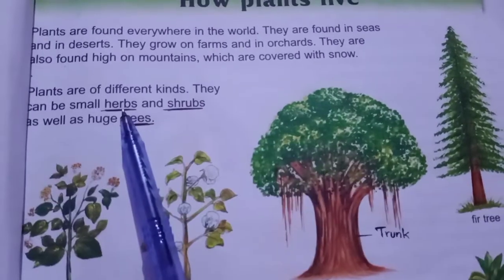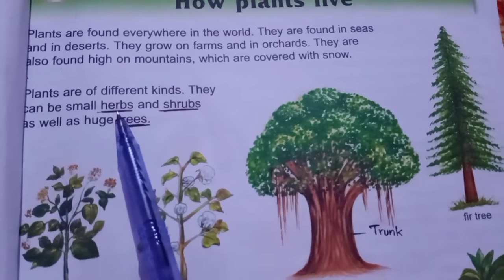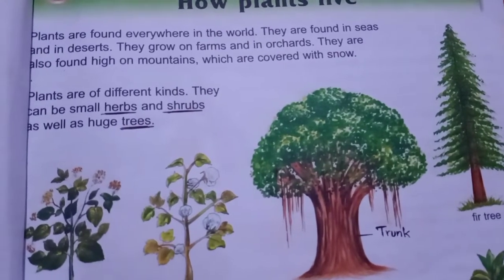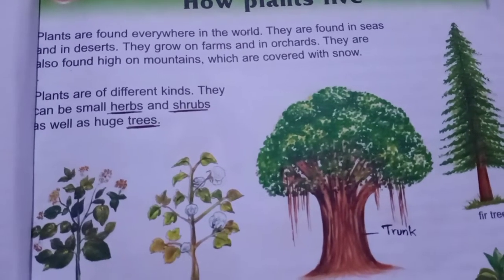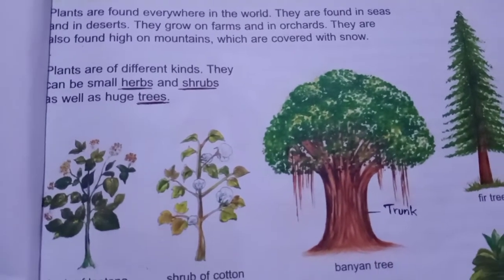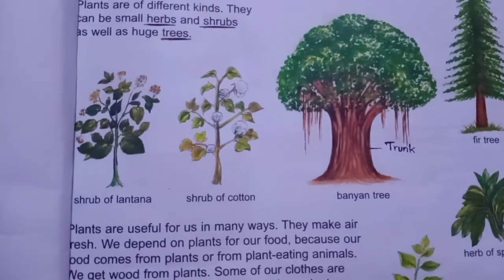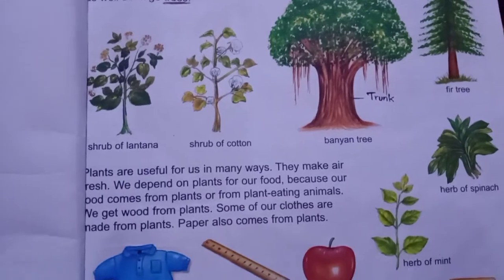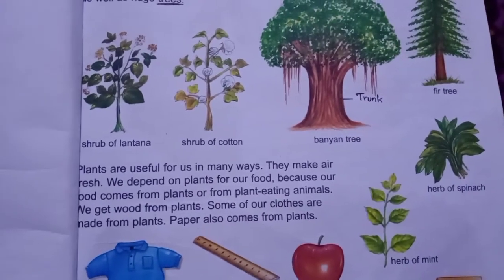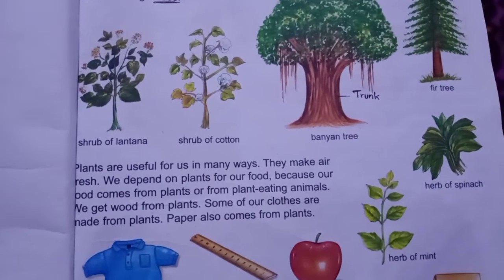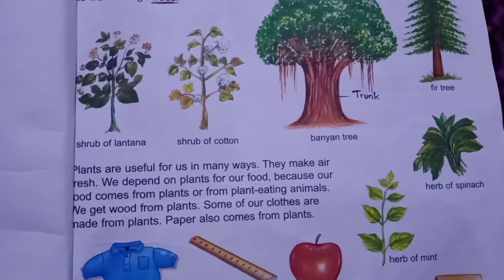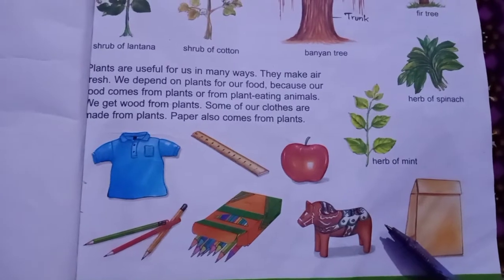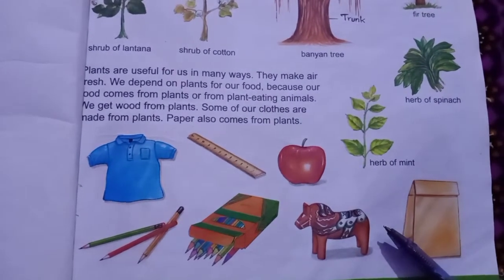Now the third type of plants are herbs. Herbs are small plants — بہت چھوٹے plants herbs کہلاتے ہیں، جنہیں ہم جڑی بوٹیاں بھی کہتے ہیں۔ They have green stems — ان کے stems green color کے اور soft یعنی نرم ہوتے ہیں۔ It means وہ non-woody ہوتے ہیں۔ For example: herb of mint and herb of spinach.